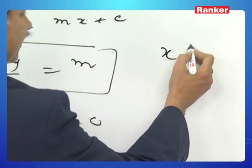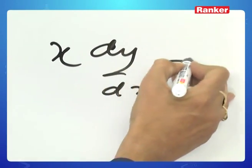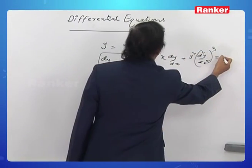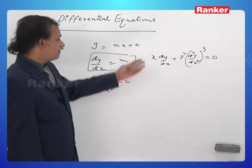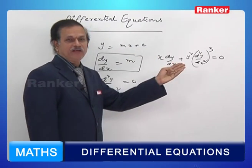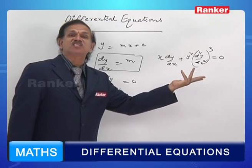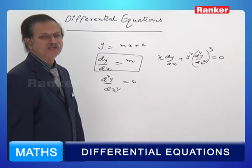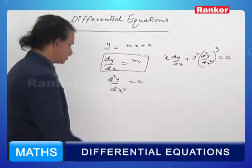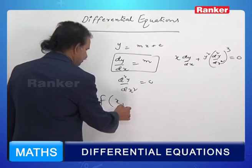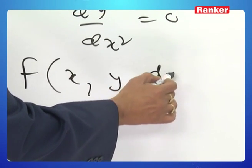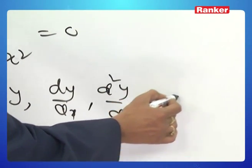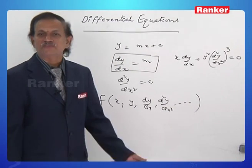Observe one more equation: x dy by dx plus y square into d square y by dx square, whole cube, is equal to 0. That is another equation in which the independent variable x, dependent variable y, and differential coefficients — namely dy by dx and second order derivative d square y by dx square — are also involved. All such equations in which x, y, dy by dx, d square y by dx square, etc., are present form a differential equation.